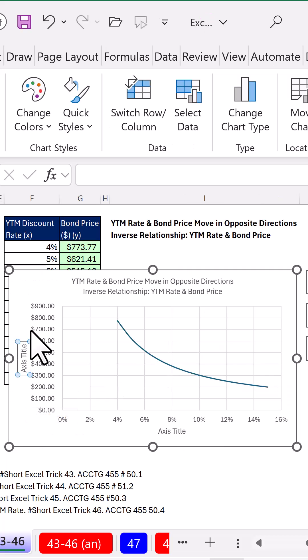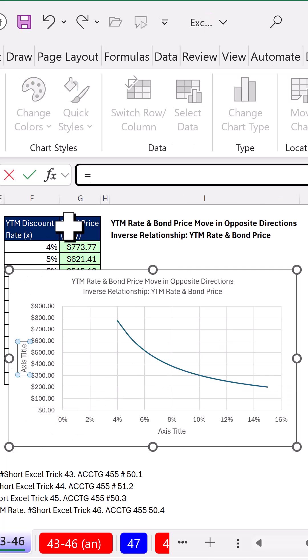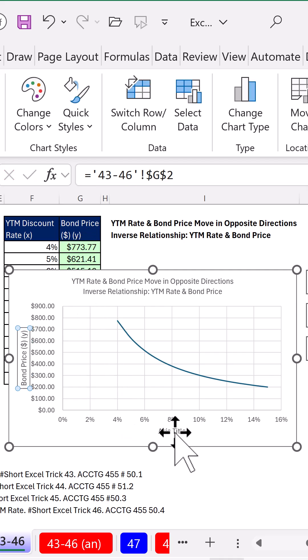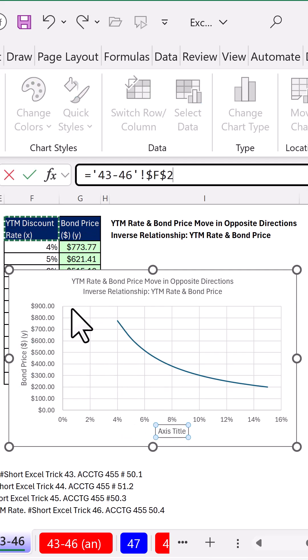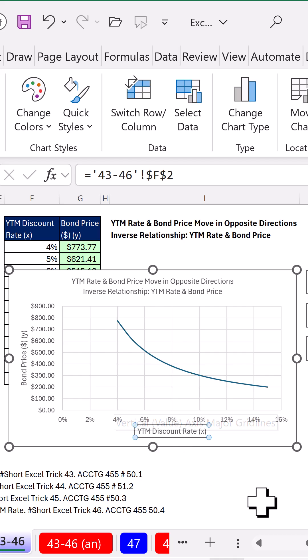With the vertical axis selected with the solid line, equal sign, there's Y, bond prices. This axis title, equal sign, there's our X, YTM, the discount rate.